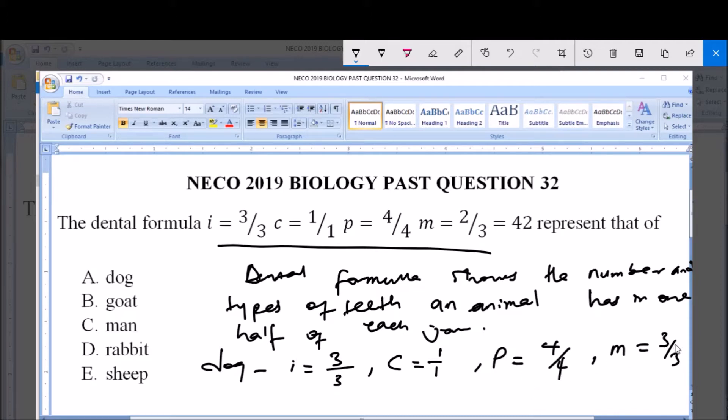And the molar is 2/3—sorry, 2 over 3. That is 2 molars in the upper jaw and 3 molars in the lower jaw. Remember, it is one half of each jaw. So altogether, when you carry out the arithmetic, it will give you 42.